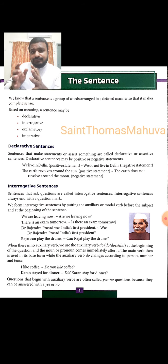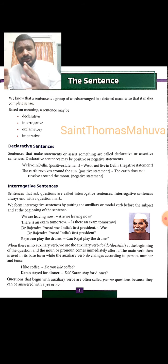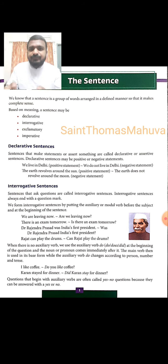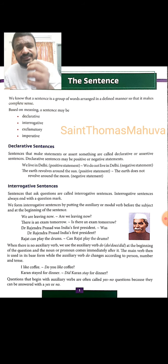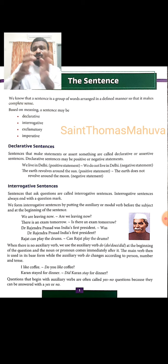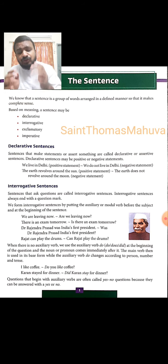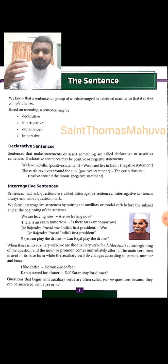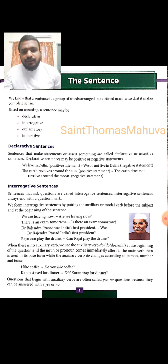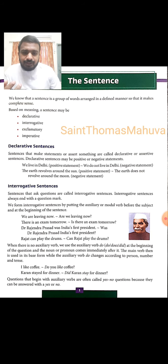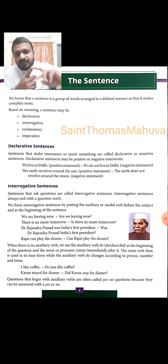In order to make questions, we need to put either the auxiliary verb or the modal verb at the beginning of the sentence, then comes the subject. For example, 'There is an exam tomorrow' — we take the verb to the front to form the question. When there is no auxiliary verb, we use the auxiliary verb 'do' and its forms at the beginning, with the noun or pronoun coming immediately after it. The form of 'do' used depends on person, number, and tense. For example, 'I like coffee' becomes 'Do you like coffee?'